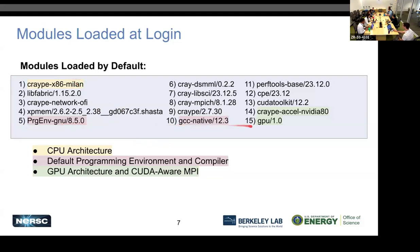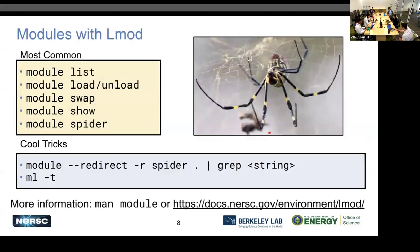The modules shown in red are specific to the compiler — for example, the GNU programming environment uses the GCC compiler. The green ones relate to GPUs, with specific settings for GPU acceleration. When working with modules, the most common commands are: 'module list' to show what's loaded, 'module load' and 'module unload' to add or remove modules from your environment.